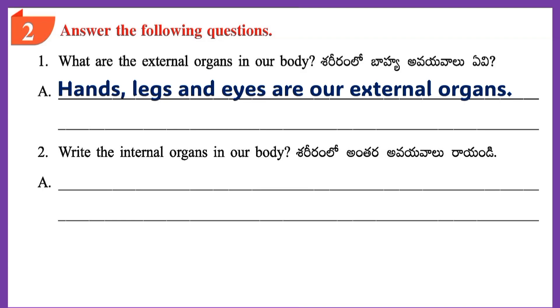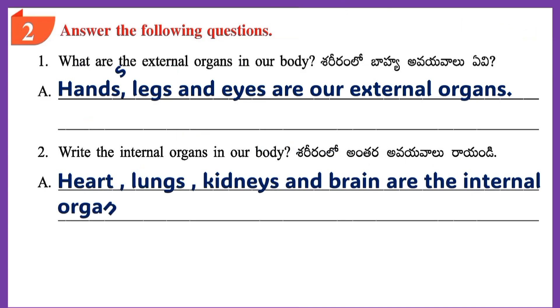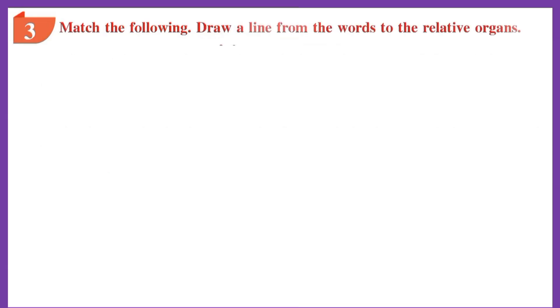Question 2: Write the internal organs in our body. Answer: Heart, Lungs, Kidneys and Brain are the internal organs in our body.